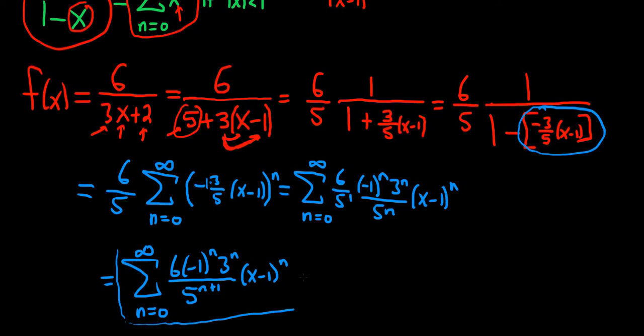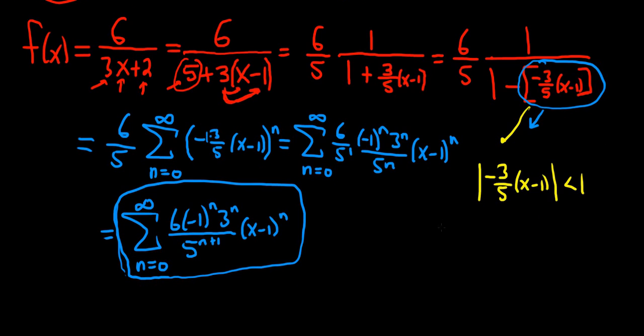And this will converge only when this is less than 1 in absolute value. So let's go ahead and find that. That's going to be the interval of convergence. You just take this piece, and you put it in absolute value, and you set it less than 1 in order to find the interval of convergence. When we do that, the absolute value goes away on the 3 fifths. You take the absolute value of negative 3 fifths, you just get 3 fifths, and so you get this.